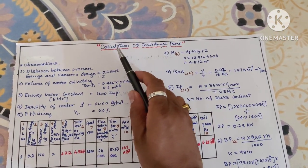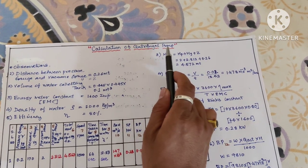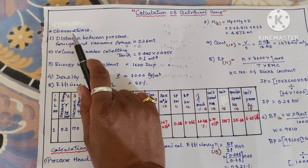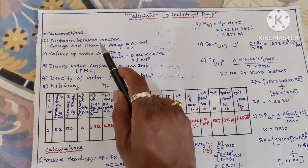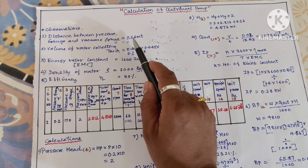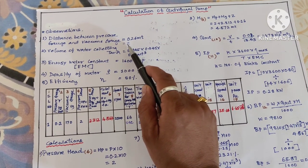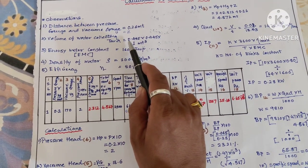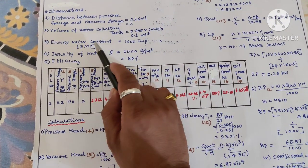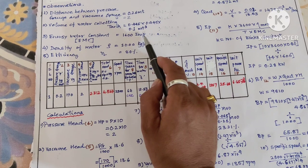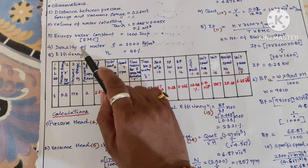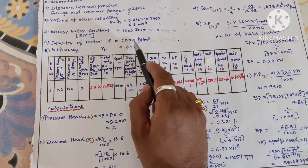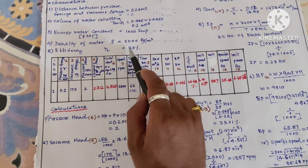Hello my dear students, today we are going to do the calculation part of centrifugal pump. The first consideration we need to take are observations. The first one is distance between the pressure gauge and vacuum gauge, which is 0.26 meter, denoted as z. Volume of water collecting tank is given. Energy meter constant is 1600 imp, density of water (ρ) is constant at 1000 kg per meter cube, and efficiency is 80 percent.